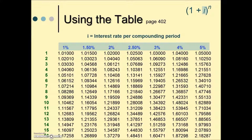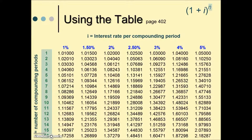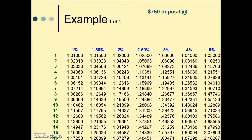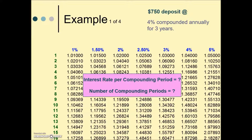The horizontal values are the interest rate per compounding period, and the vertical axis is the number of compounding periods. Here's an example of how it works. Say we have a $750 deposit at 4% compounded annually for three years. If we calculate our interest rate per period and our number of compounding periods, we can pull the multiplier from this table.